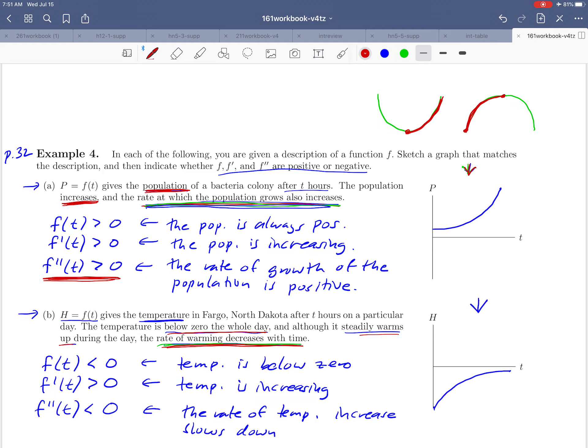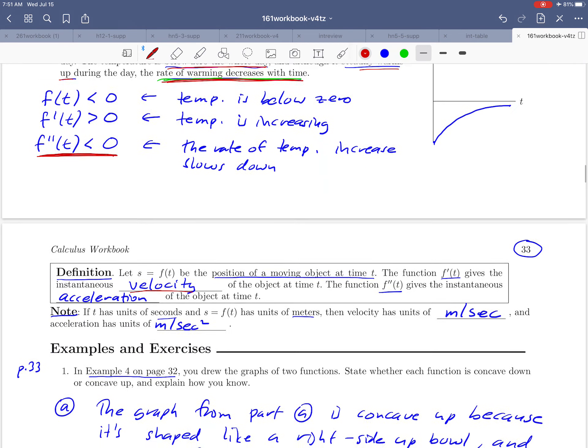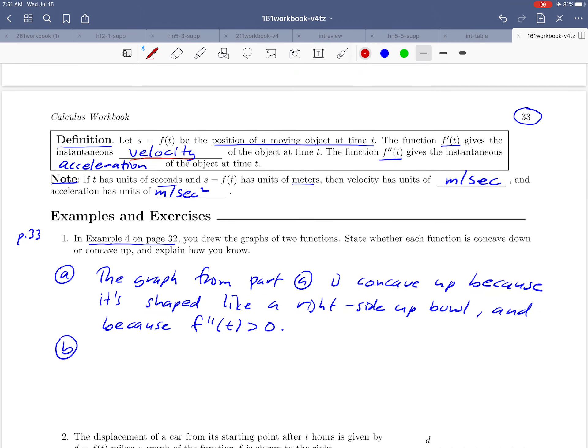Okay another reason that it's concave down would be the fact that we noticed that the second derivative was negative. Okay so for either of those two reasons B is a concave down function. Let's write that.